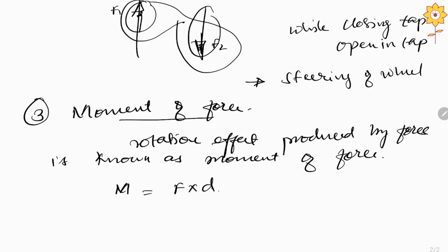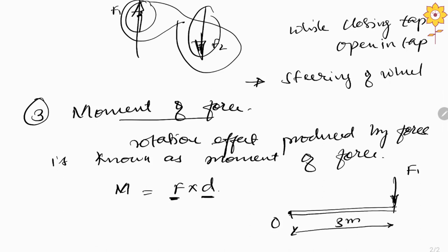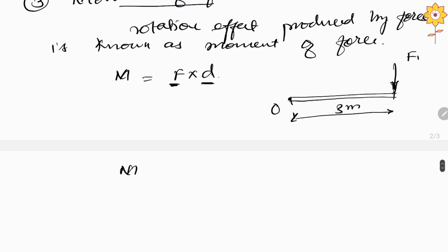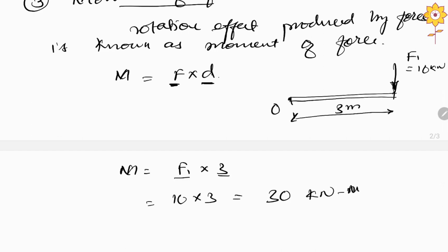If you want to consider a moment, that is nothing but the given force into the perpendicular distance. Suppose in a bar, the force F1 is acting downward, and the point of origin is O, and the distance is 3 meters. According to the formula, moment equals F1 into 3. If F1 is 10 kilo Newtons, so it is 10 into 3, which becomes 30 kilo Newton meters. This is the moment of force, and like this we can find out the moment of a particular system.